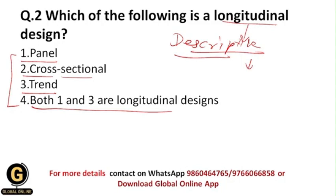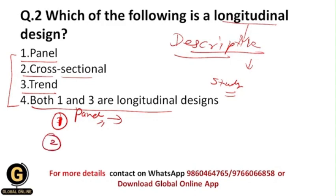Within longitudinal design, we study a single individual over a longer period of time. Longitudinal design has three types: the first is panel study, in which the unit of analysis is observed at specific intervals over a long period of time. The second is cohort study, where we collect information from a group of people who share specific characteristics.